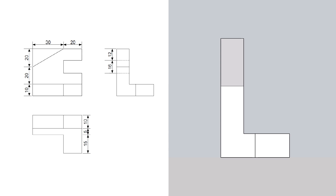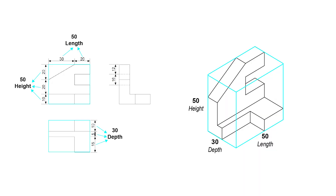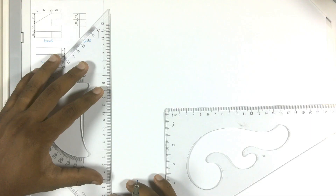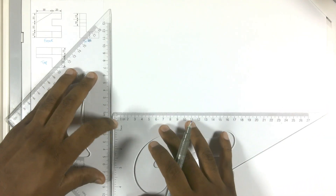Now we must find the dimensions for the crate of the object. To get the length we must add 30 plus 20. To get the height we must add 10, 20, and 20. And to get the depth we must add 15 plus 5 plus 10. Now let's draw the object again — we will have to draw our two double lines.